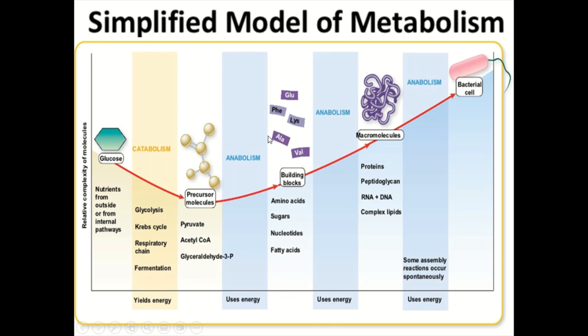In the anabolism process, pyruvate and acetyl-CoA are used as building blocks for proteins and nucleic acids. Molecules like amino acids, sugars, nucleotides, and fatty acids are formed. These result in the formation of macromolecules like proteins, peptidoglycans, RNA, DNA, and complex lipids, and these molecules are assembled to form the bacterial cells.